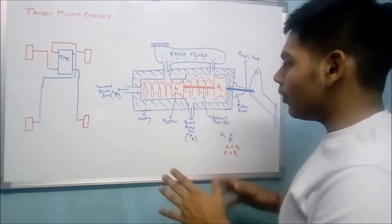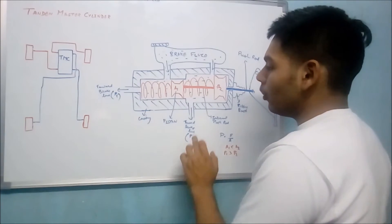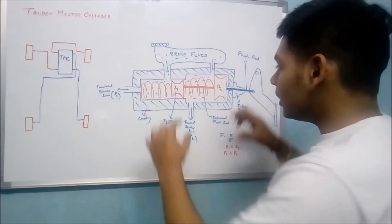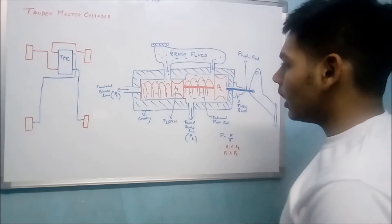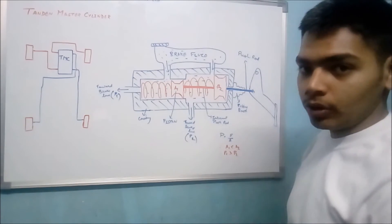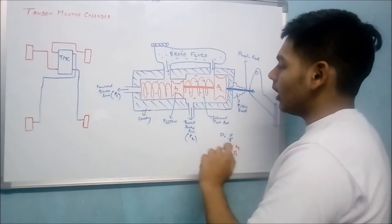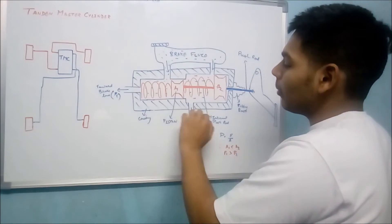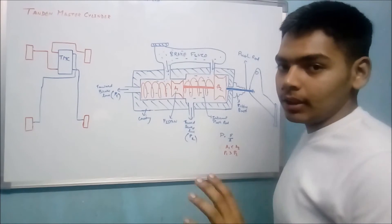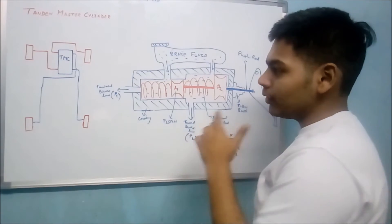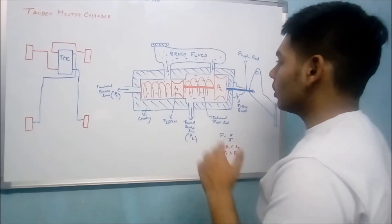In this way you can achieve P1 and P2 different. By changing the bore diameter of this TMC, you can achieve different pressure at different ports. In case of the master cylinder, since the pistons are of the same diameter, the pressure created at both ports is similar. So in this way you can achieve different pressure at different ports.